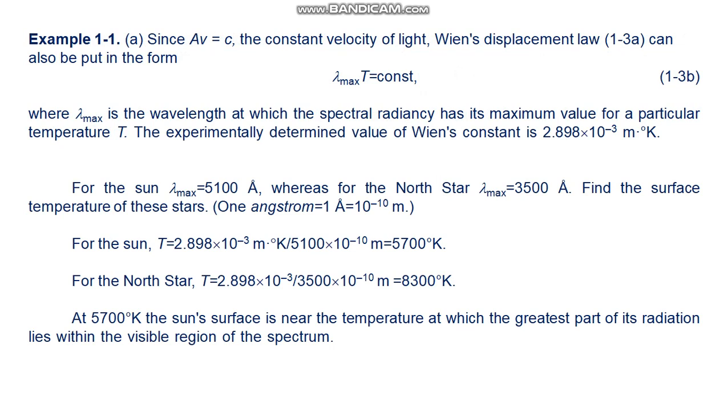If we assume that stellar surfaces behave like black bodies, we can get a good estimate of their temperature by measuring λ_max. For the sun, λ_max = 5100 angstrom, whereas for the North Star, λ_max = 3500 angstrom. Find the surface temperature of these stars. One angstrom = 10^-10 meter. For the sun, T = 2.898 × 10^-3 meter · Kelvin / (5100 × 10^-10 meter) = 5700 Kelvin.